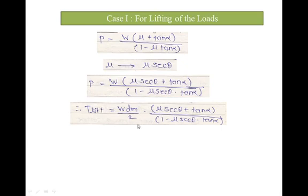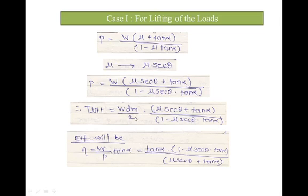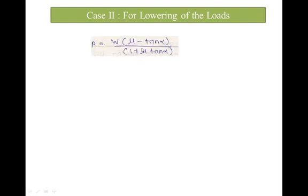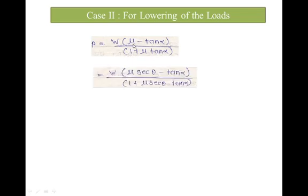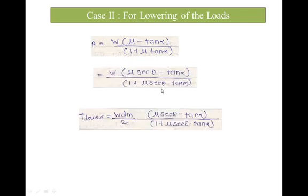Compared to the square thread, this is W·dm/2·tan(φ + α). The efficiency is calculated as W/P·tanα. This is the complete equation for lifting the load. Similarly, for lowering the load — that is, movement of the thread in the direction of load — we have the equation P = W·(μ − tanα) / (1 + μ·tanα). Therefore, replace μ by μ·secθ.